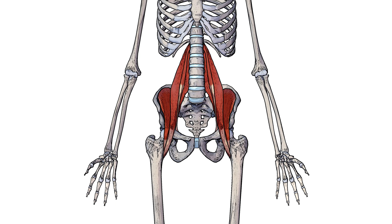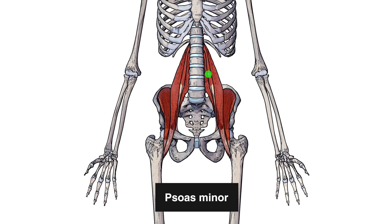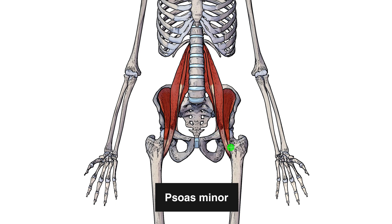I've now brought in the last muscle of the iliopsoas, which is the psoas minor — you can see it coming down here. The psoas minor actually connects onto the hip, so it's not sharing that insertion point with the iliacus and the psoas major. This is why some internet sources haven't included the psoas minor as part of the iliopsoas muscle group.